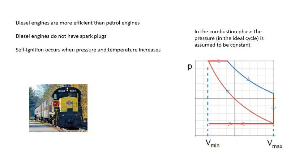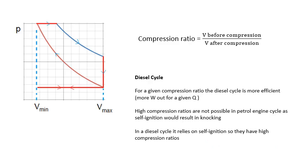This is the PV diagram for a diesel engine. Can you notice the difference between that and the petrol engine? The significant difference is at the combustion phase. Notice that in the ideal cycle we assume the combustion phase happens at constant pressure. In the petrol cycle, in the combustion phase, the pressure increased — here we assume it's constant.